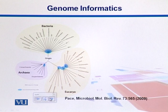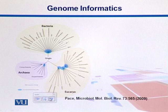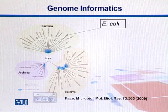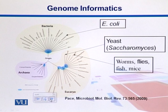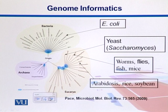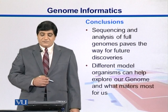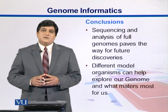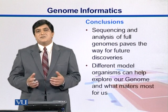In this diagram we see a universal tree of life made using the structures of the small ribosomal RNA unit. It divides all living organisms into three groups: bacteria, archaea — which live under harsh conditions — and eukarya, the largest group. We pick model organisms from important branches of this tree. E. coli represents bacteria, yeast represents fungi, and from animals we have worms, flies, fish, and mice. Arabidopsis, rice, and soybeans represent plants. We try to get the best representatives from different classes, and genome sequencing of these organisms powers the way for future discoveries.